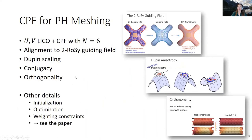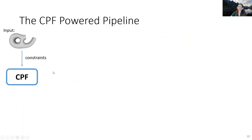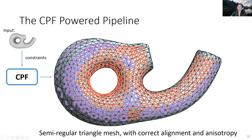Using this framework, we can now pose these challenging constraints for planar hex meshes—the alignment and anisotropy constraints—feed it to the CPF framework, and get as output a semi-regular triangle mesh which has the correct alignment that we require.